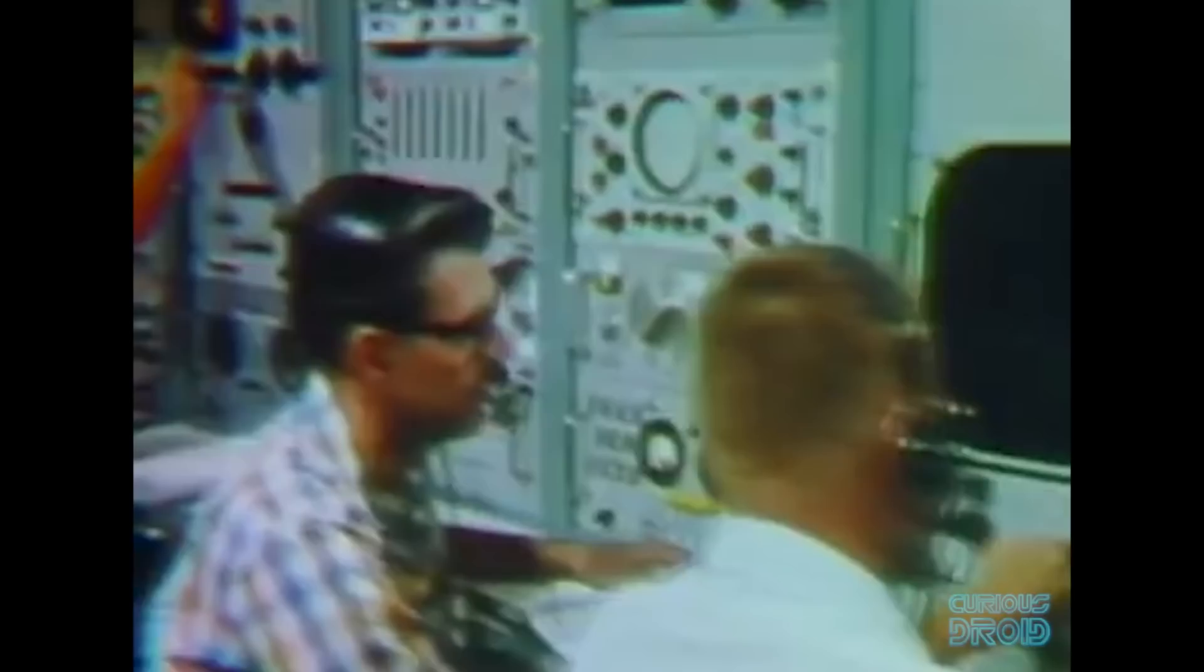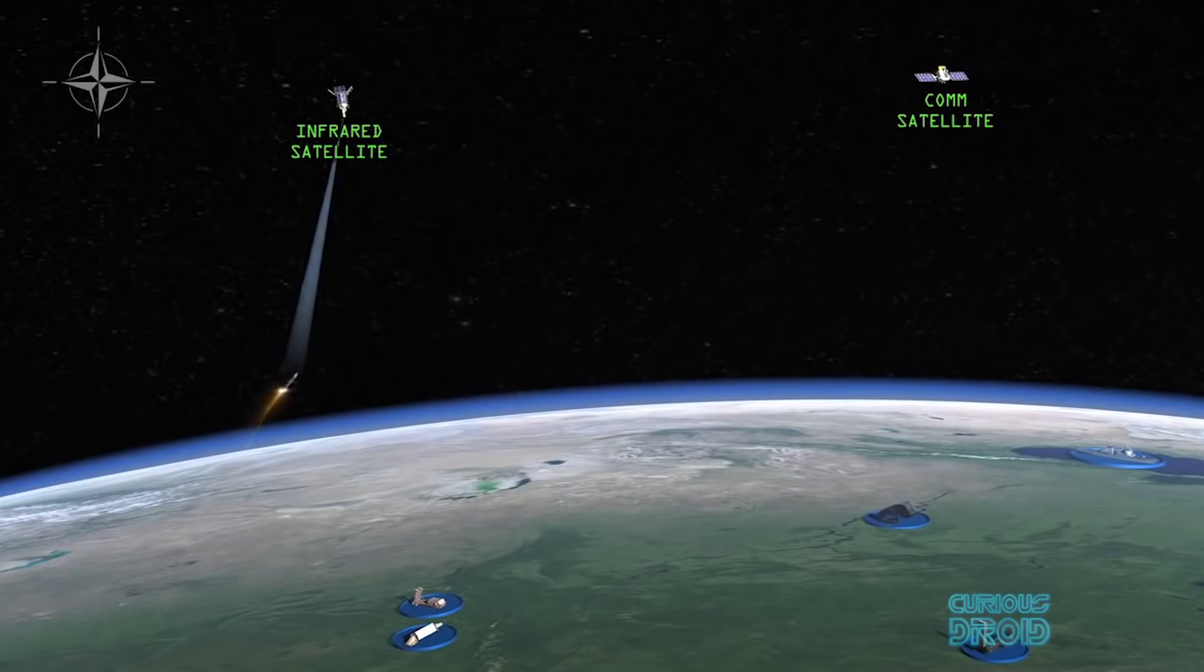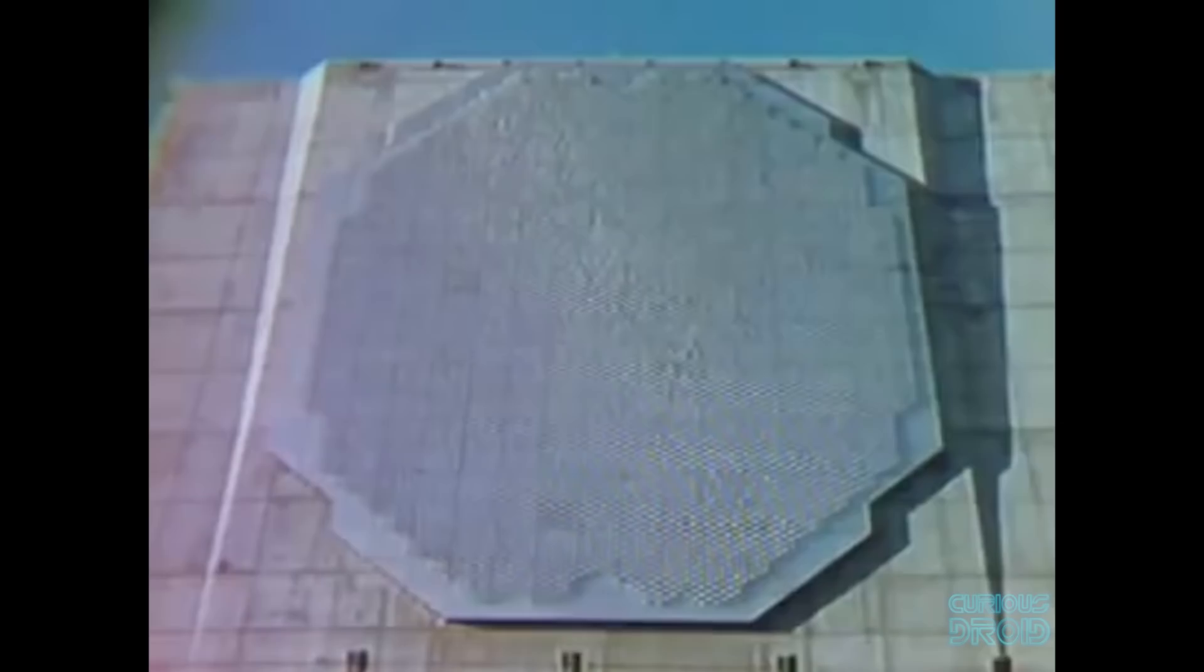Before anything can be done, you have to detect when a launch has happened. Today we have satellites with infrared sensors. These are constantly on the lookout for the telltale heat plume from the rocket engines. Before the advent of the detection satellites, the only way to know a launch had occurred was from early warning radar posts detecting that an object had risen quickly above a certain altitude.